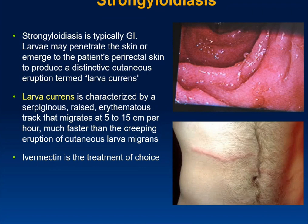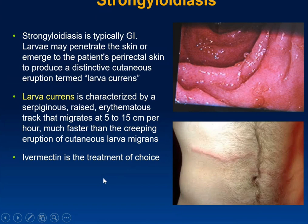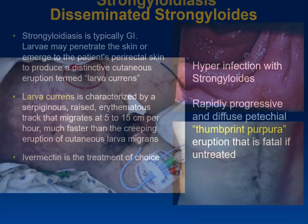While we usually think of Strongyloides in the GI tract, larvae can cause cutaneous disease in generally immunocompetent individuals. The lesions are serpiginous, raised, and erythematous tracts that can move — 5 to 15 centimeters per hour. That's much faster than cutaneous larva migrans, which tends not to move as quickly.